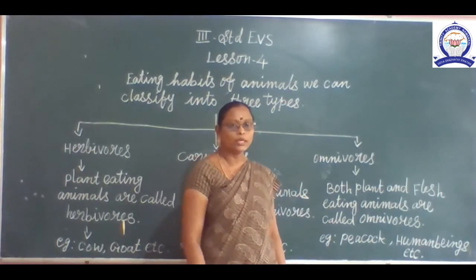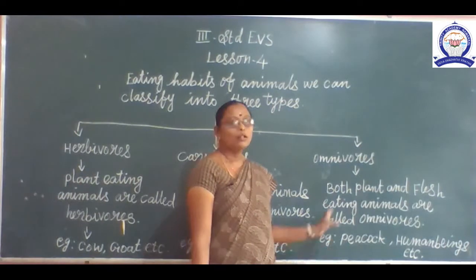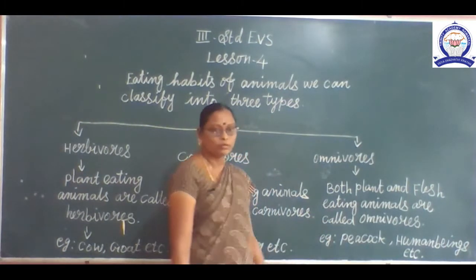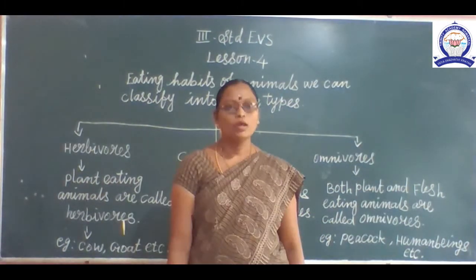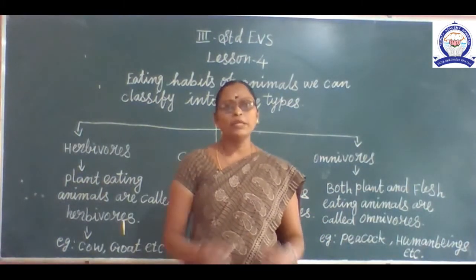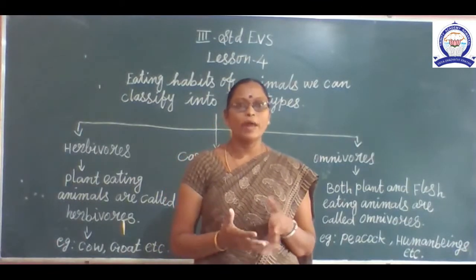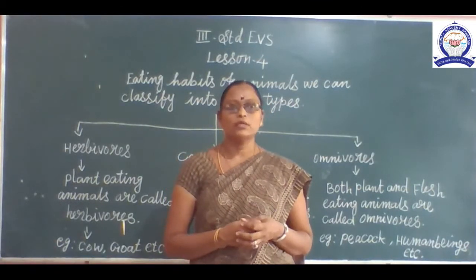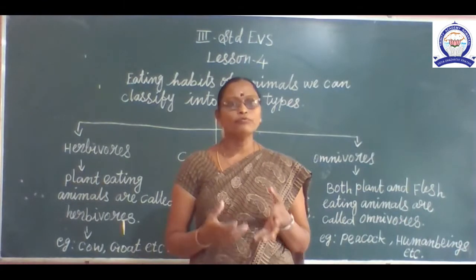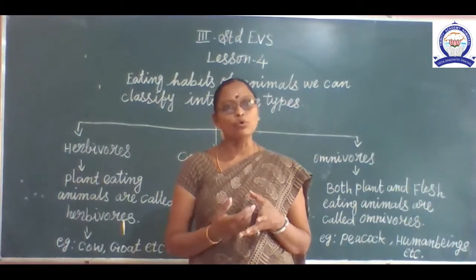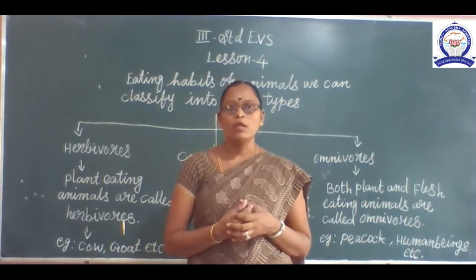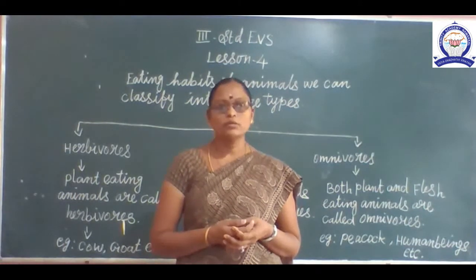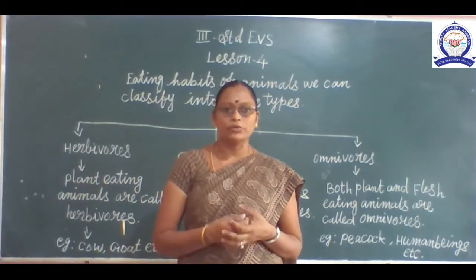Human beings are also omnivores. They eat different parts of plants. They also get food from animals in the form of milk, eggs, fish, and meat.